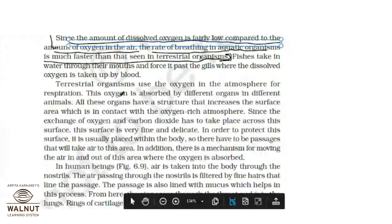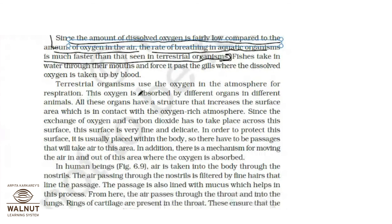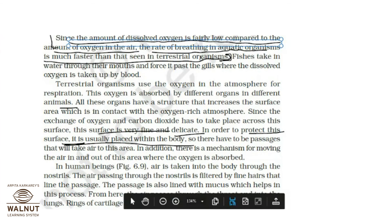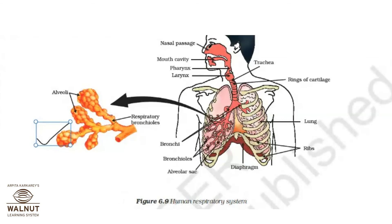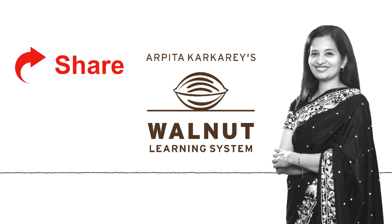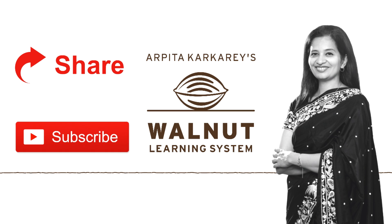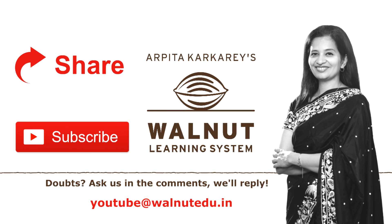Terrestrial organisms use oxygen in the atmosphere for respiration. This oxygen is absorbed by different organs in different animals. They need very fine and delicate surfaces for gaseous exchange, and those organs need protection. This covers what we have studied today about respiration; the human respiratory system in detail will be covered in tomorrow's class.